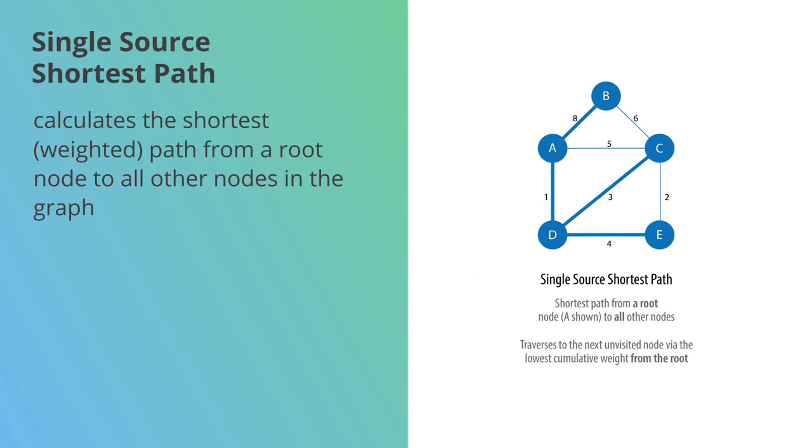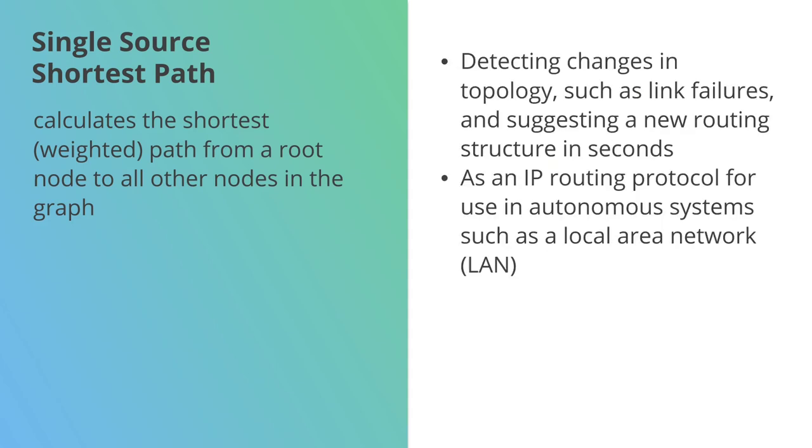This one could be used for doing sort of link failure testing in a topology, just to see if it can come up with a new route, or it's also been used in IP routing protocols.